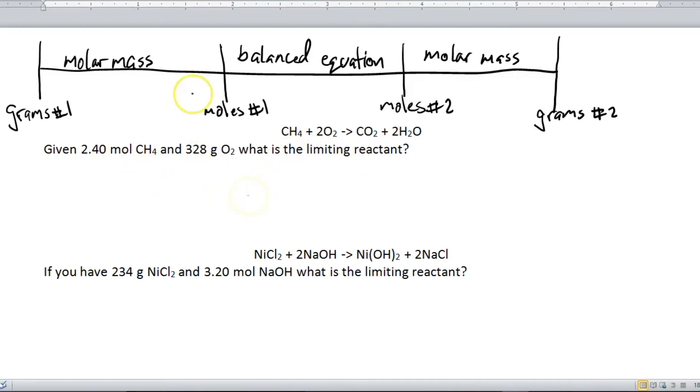Alright, well first off, I want you to notice that this question has two givens. That is your clue that this is a limiting reactant question. If it was just a normal, regular conversion question, there would only be one given. So the fact that there are two givens means this is limiting reactant, and it also means we're actually doing two calculations. Alright, so let's take our first given here, which is 2.40 moles of CH4.